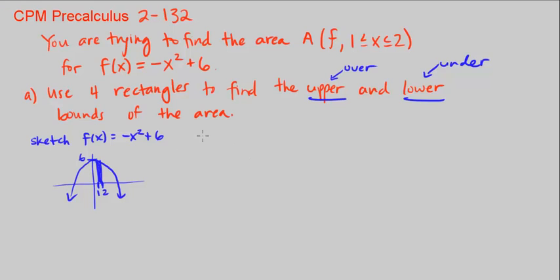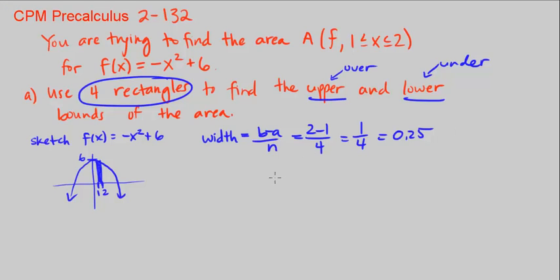Also, I want to know the width of each region, of each rectangle. And that's going to be B minus A over N, where this is A to B. So that's 2 minus 1 over 4, which is 1 over 4, or 0.25.